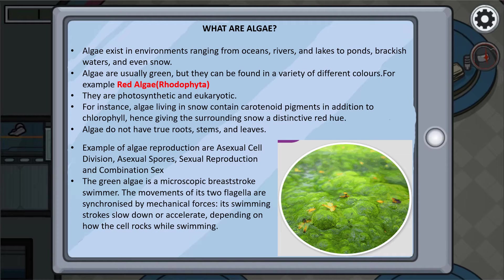Algae do not have true roots, stems, nor leaves. Examples of algae reproduction are asexual cell division, asexual spores, sexual reproduction, and combination sex. The green algae is a microscopic breaststroke swimmer. The movements of its two flagella are synchronized by mechanical forces, and its swimming strokes slow down or accelerate depending on how the cell rocks while swimming.